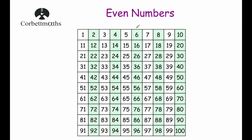The next column where they all end in 6. The next column where they all end in 8. And the last column — 10, 20, 30, 40 — where they all end in 0. So even numbers are numbers that will end in either a 2, a 4, a 6, an 8 or a 0, and they will be even.